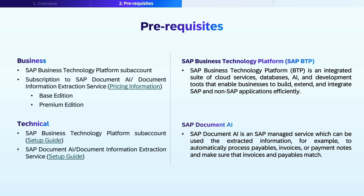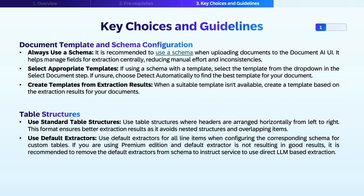Let's discuss some key decisions that impact the performance and utility of your AI applications. It is recommended to use a schema when submitting or uploading documents for extraction — it will help the service to identify and manage the fields accordingly. To further improve the results, you must also choose a template.